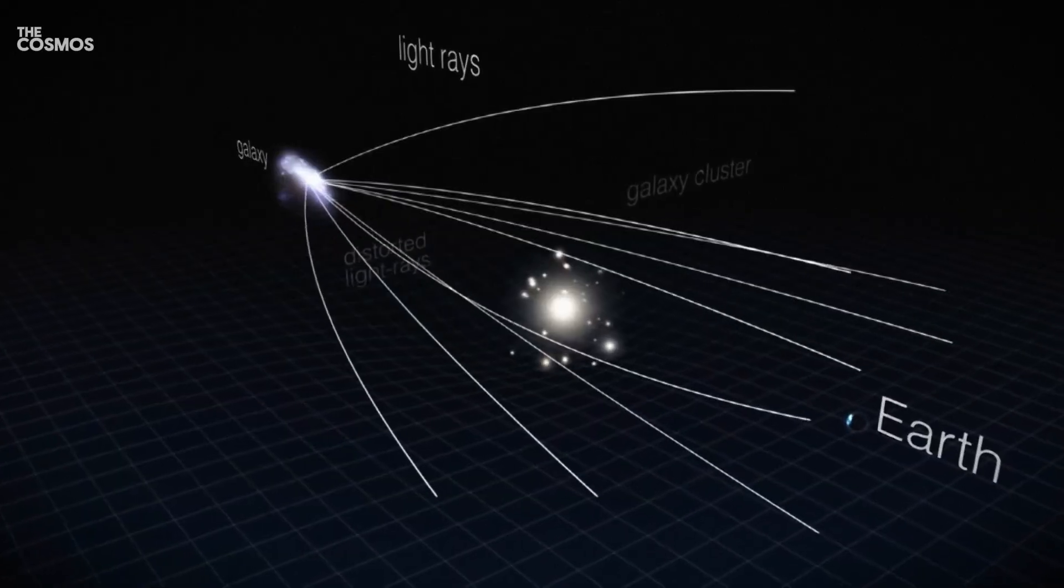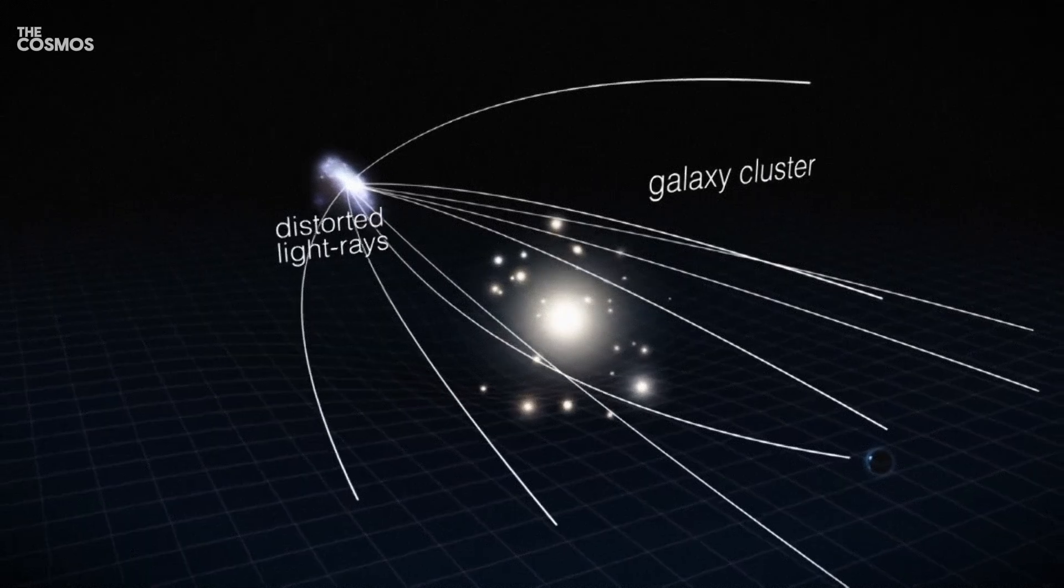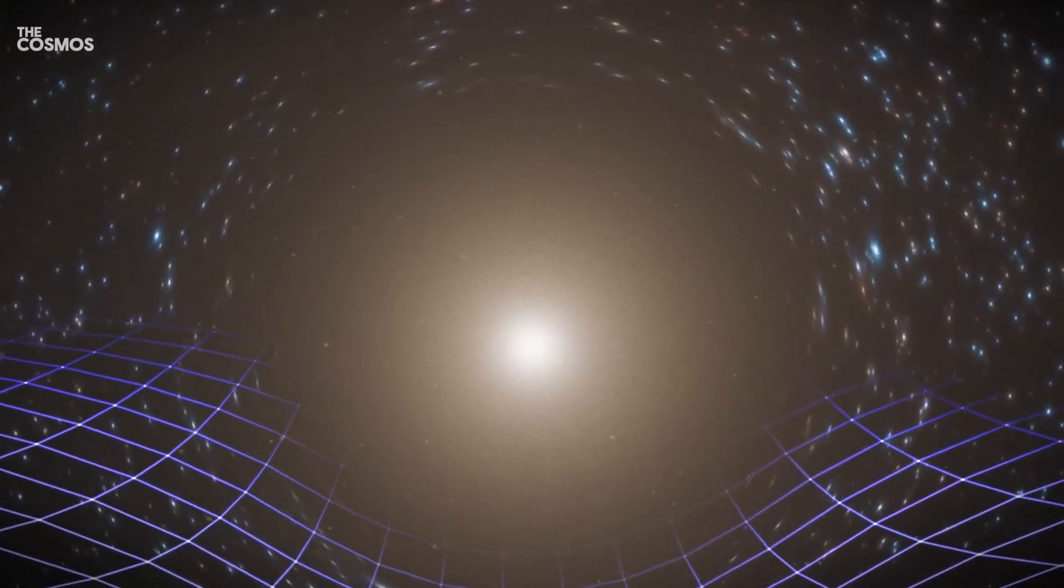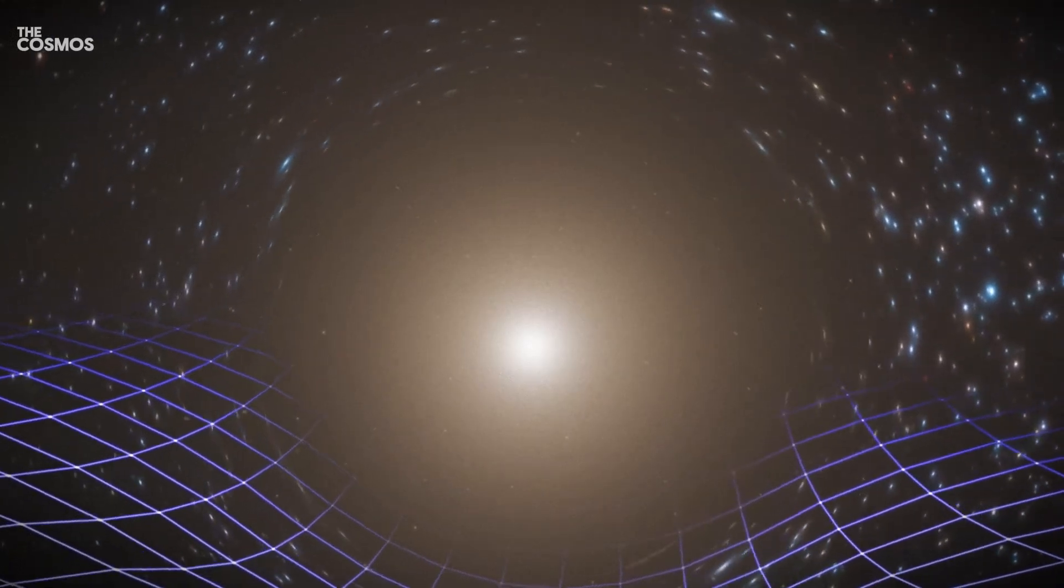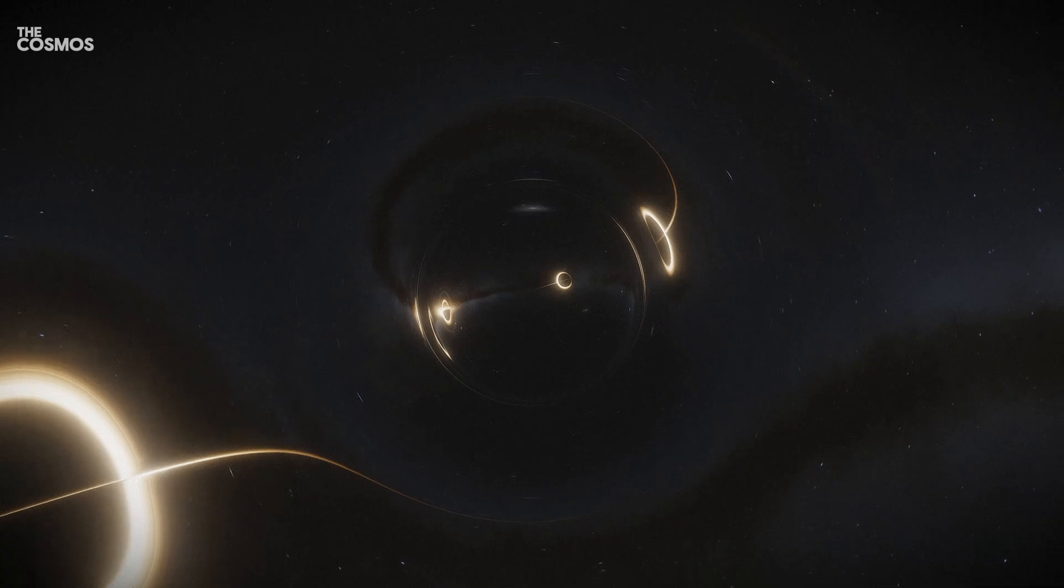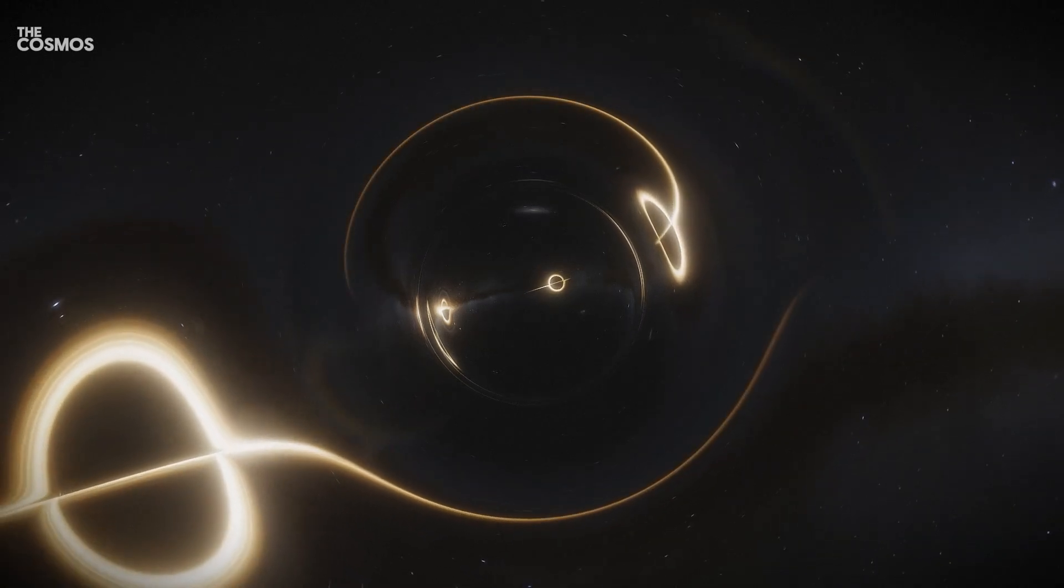This phenomenon occurs when a massive galaxy like JWST-ER1G bends the light from a more distant galaxy into a ring around itself. It's like looking through a giant magnifying glass, except this one is made not of glass, but of gravity itself.